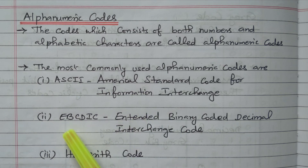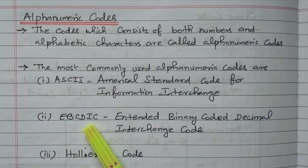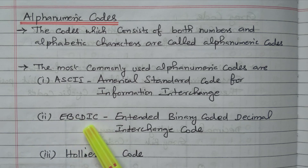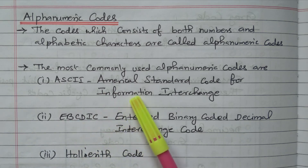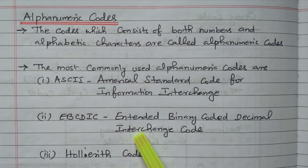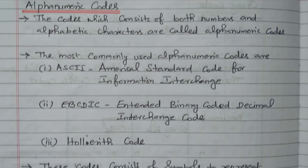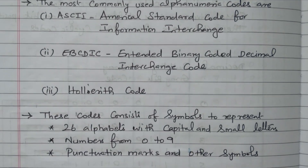Another code is the Extended Binary Coded Decimal Interchange Code, EBCDIC. It has 256 characters available. And another one is the Hollerith code, which is used for punching cards. Nowadays we are not using punching cards; it was used in earlier days.